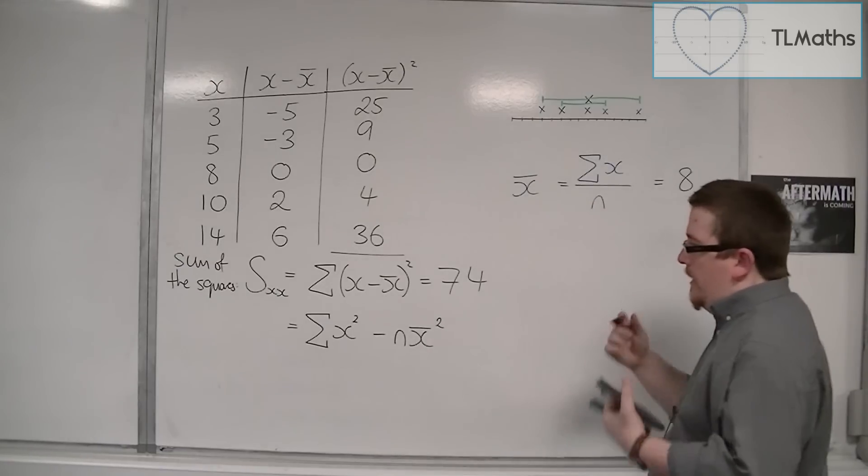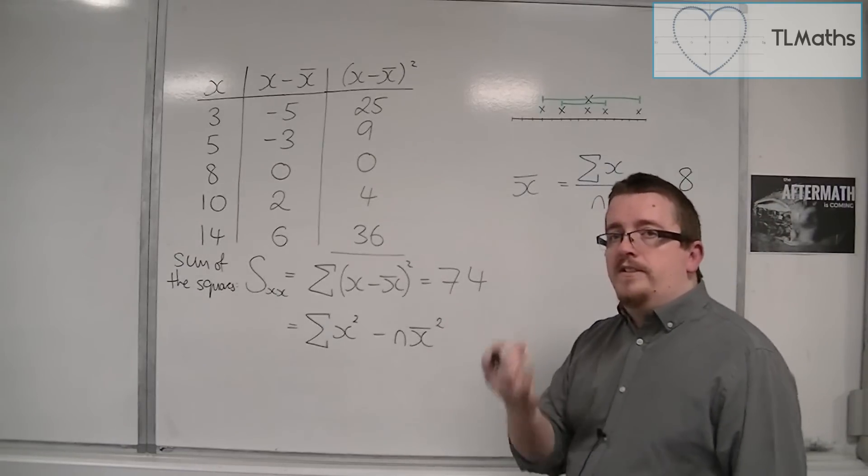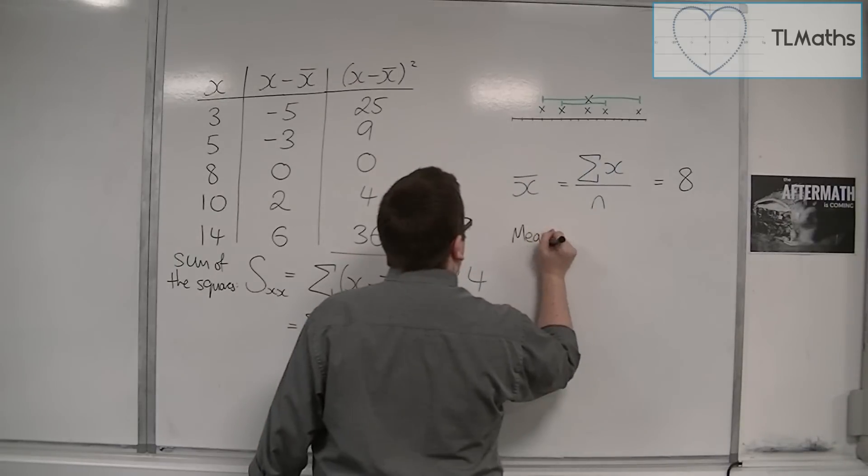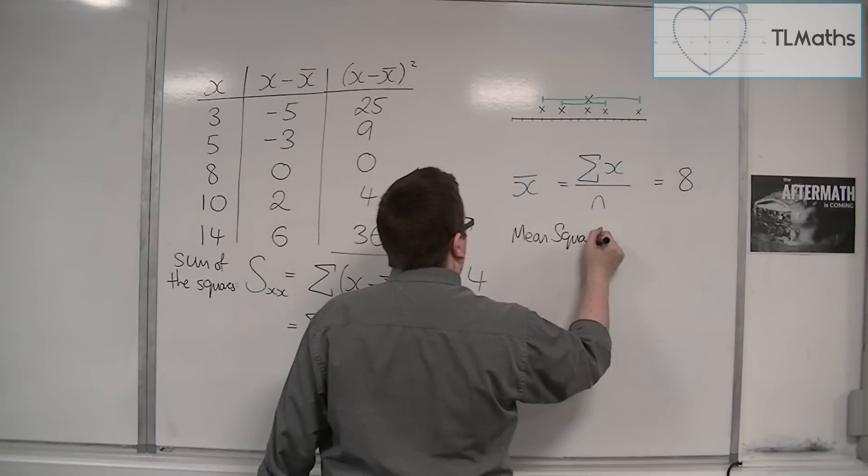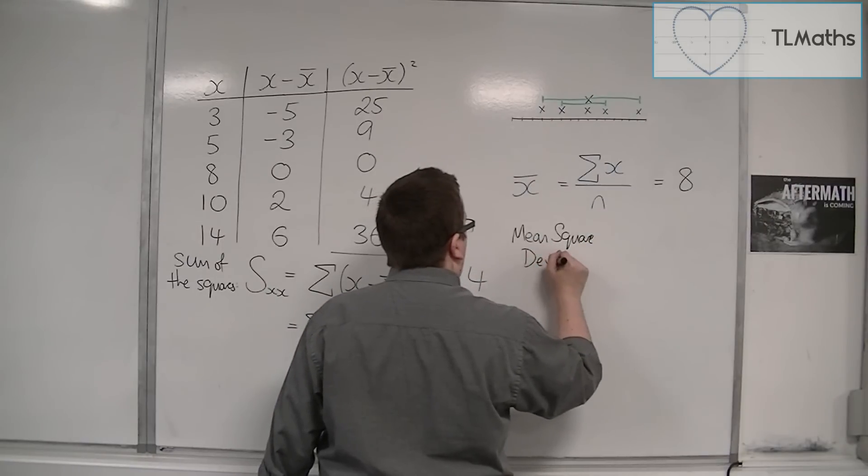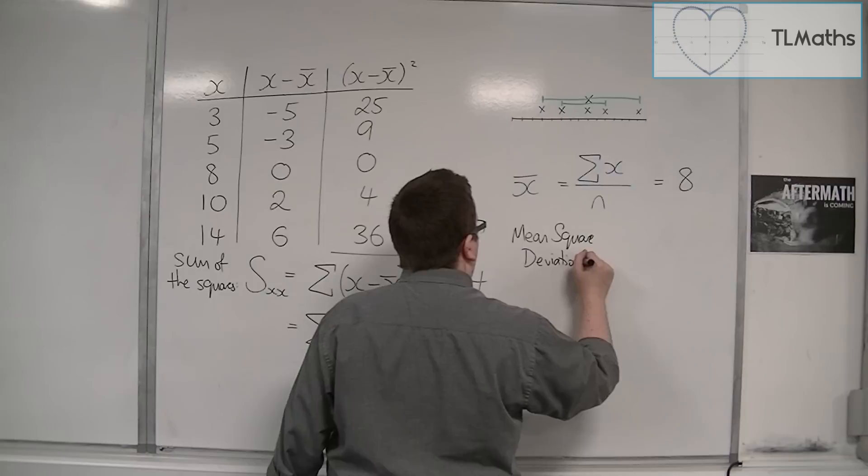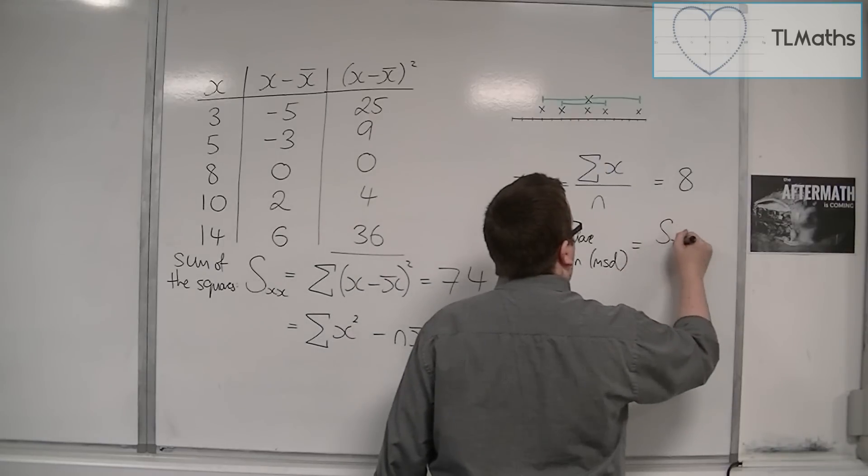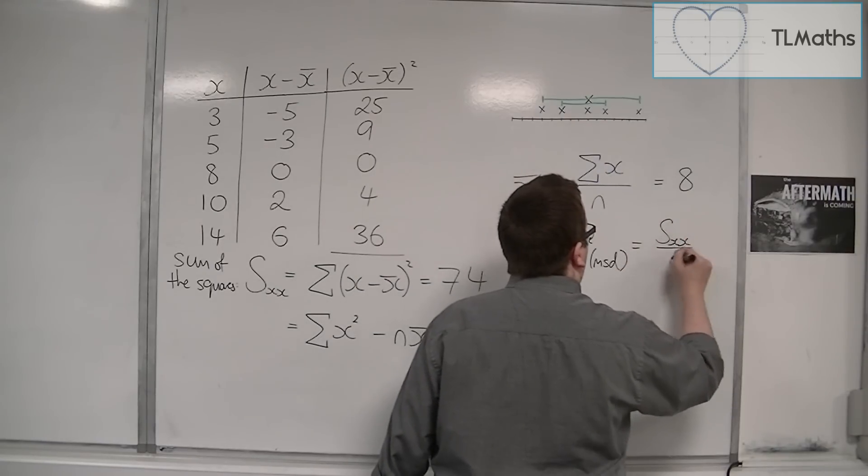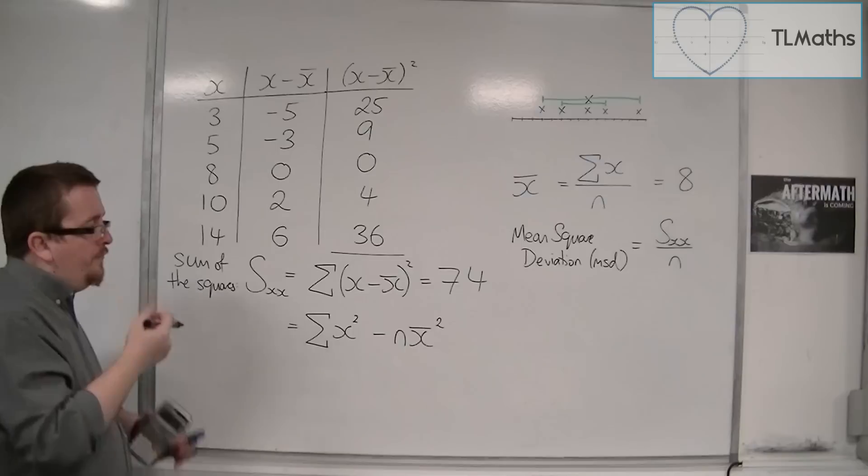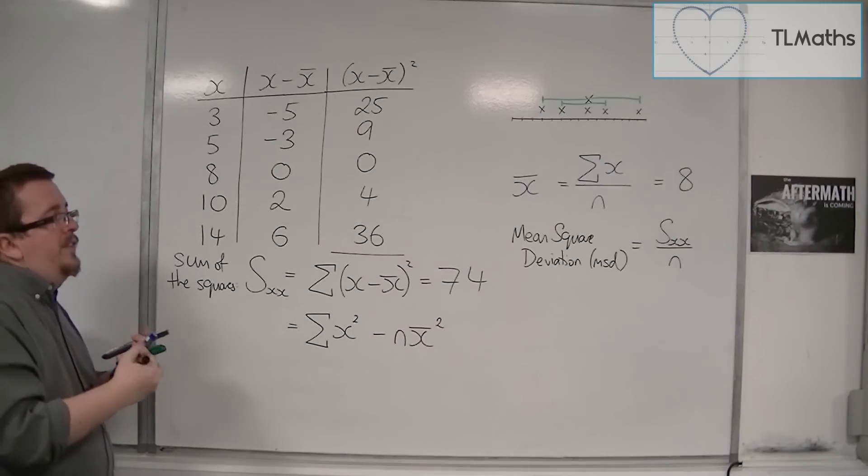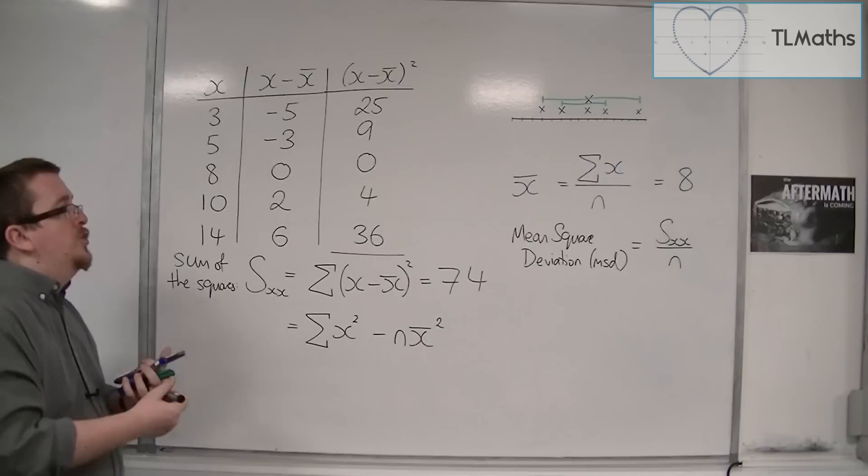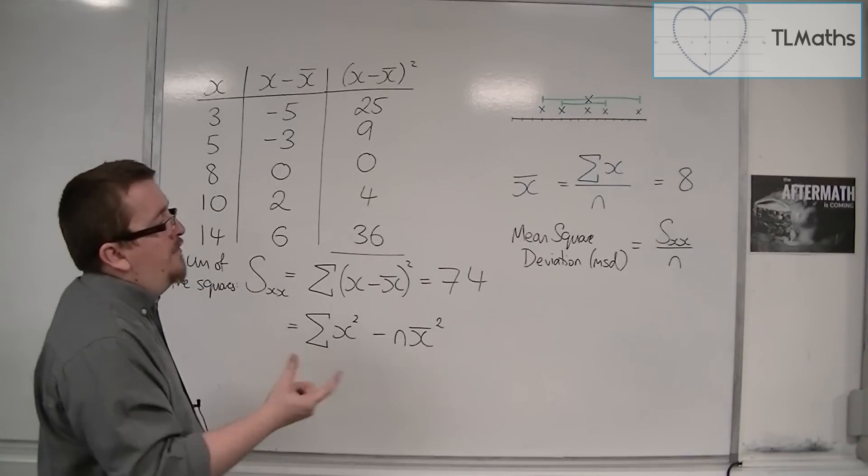So this is known as the mean square deviation. So the mean square deviation, which is abbreviated to MSD, is equal to SXX, the sum of the squares, divided by N. So that is the mean of the squares, and tells you how much they deviate away from the mean.